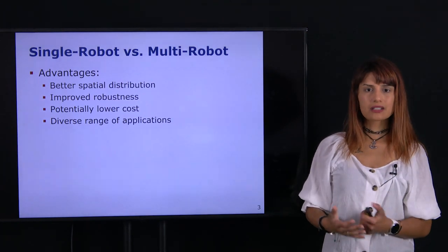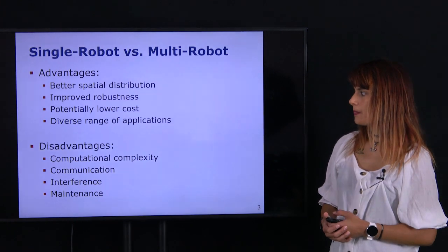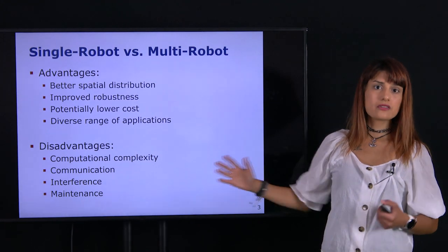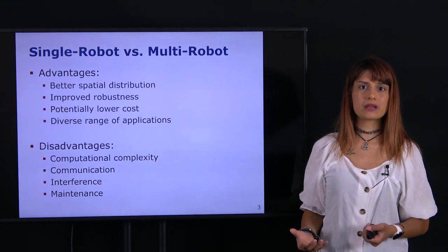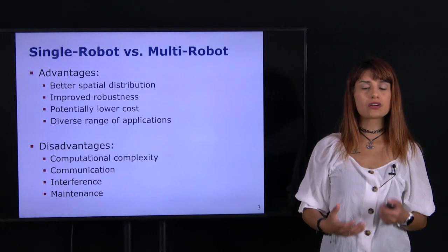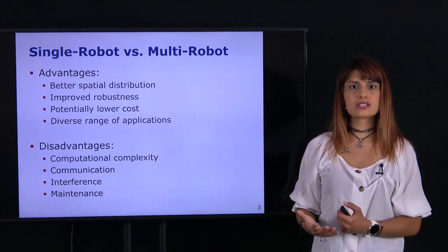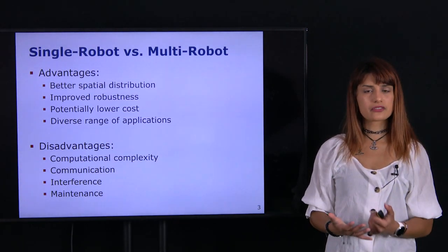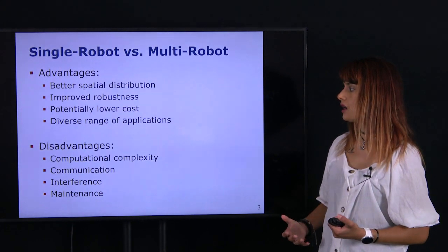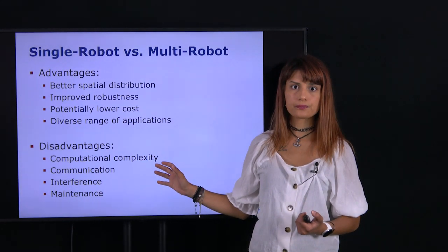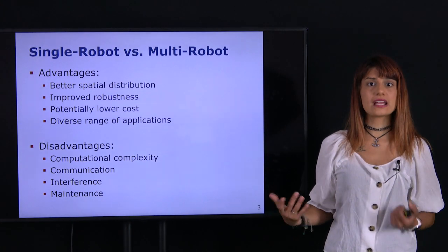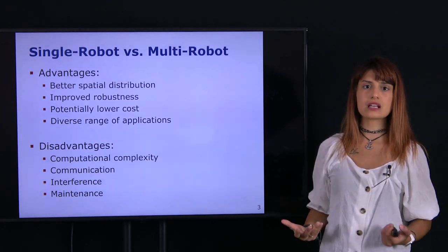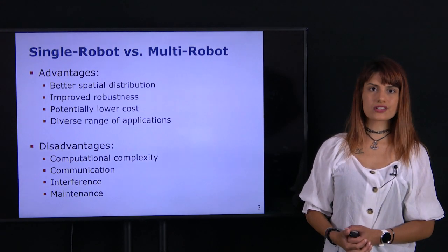However, multi-robot systems are not without disadvantages. One very significant disadvantage is computational complexity. We already saw that planning and decision-making with simply one robot is very difficult, especially with limited onboard computation and high-dimensional configuration spaces. If we increase the number of agents, this can scale very badly because we have many more variables to set and optimize to achieve planning and decision-making successfully.